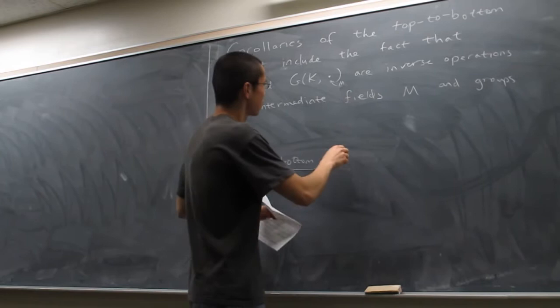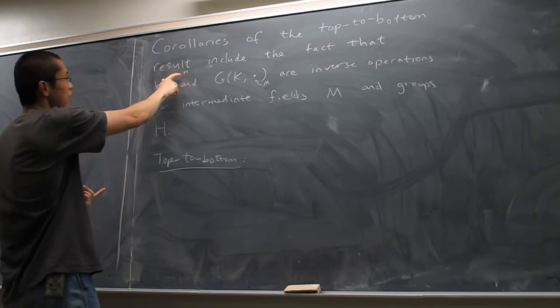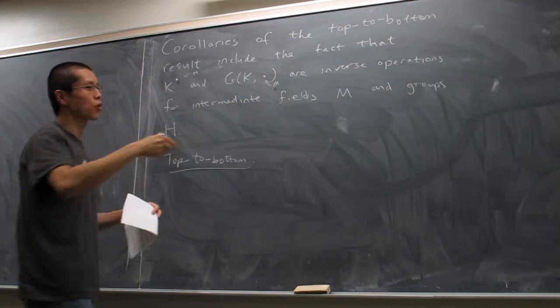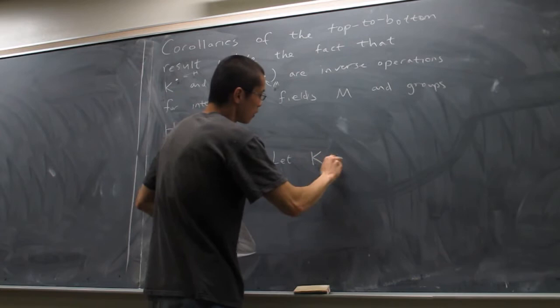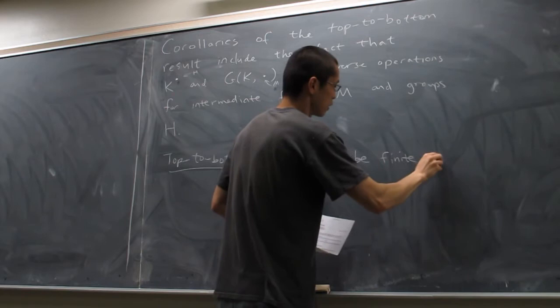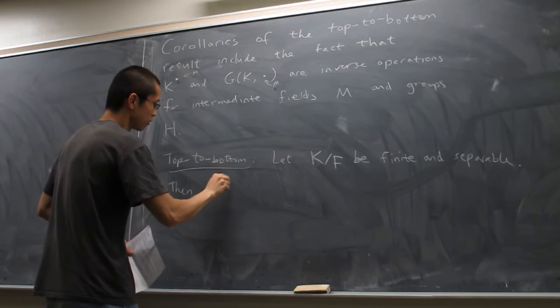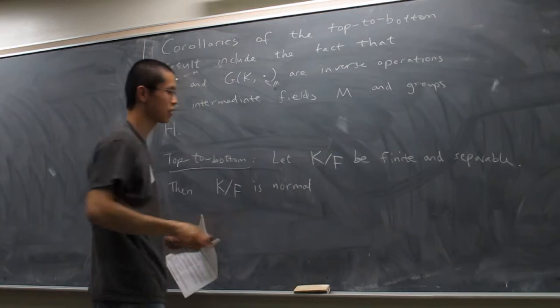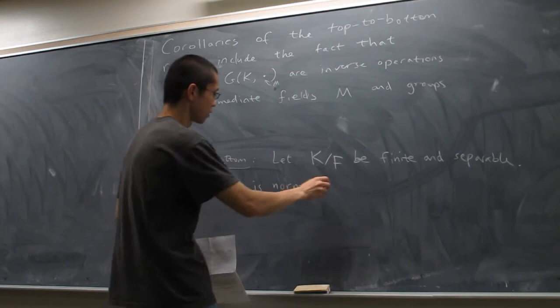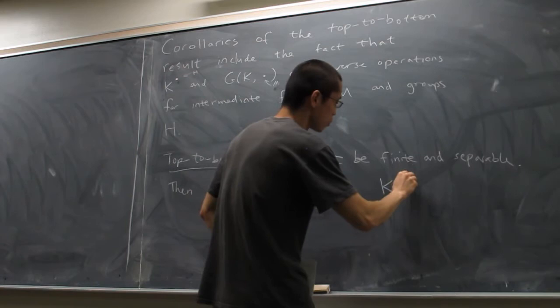The top-to-bottom result just says that these operations are inverse for one particular example, namely for H equal to the whole group G, and the field M equal to the ground field F. It says: let the field extension K over F be finite and separable. Then this is normal — meaning it's the splitting field of a polynomial that doesn't have repeated roots — if and only if the operations are inverse in this sense.